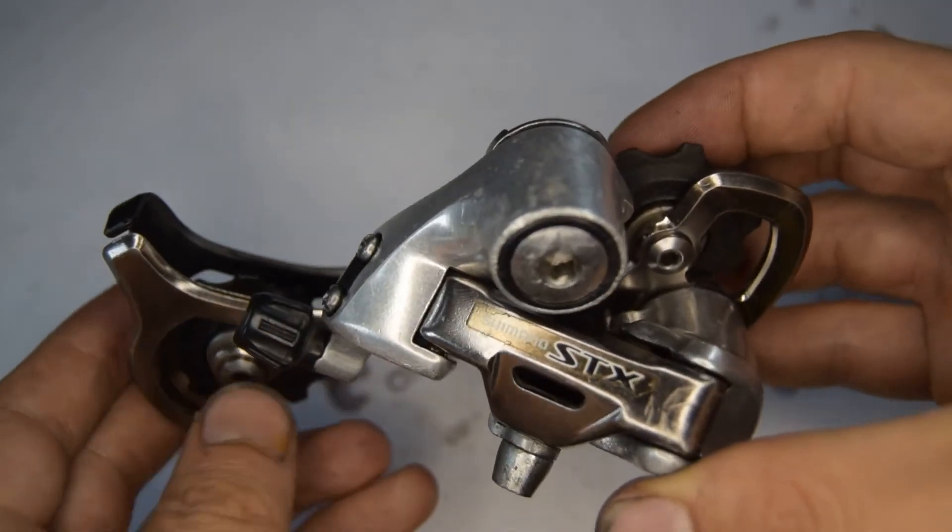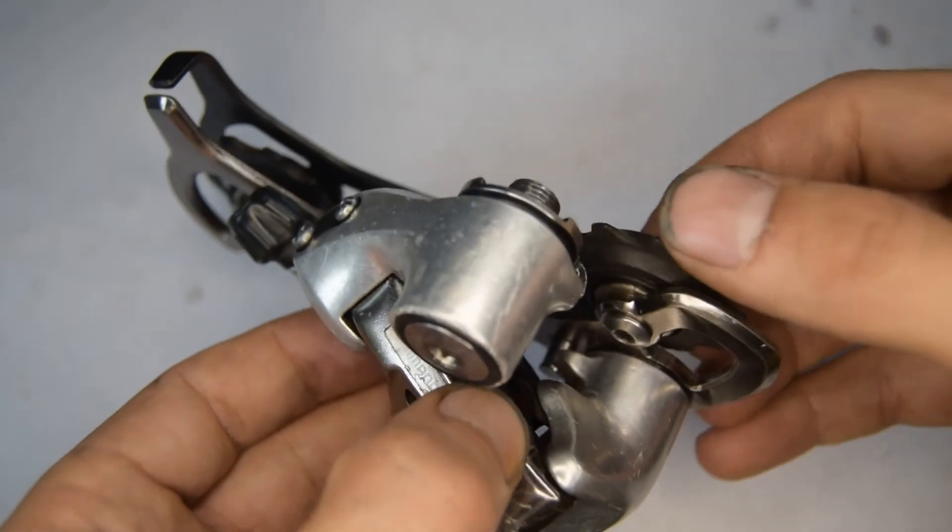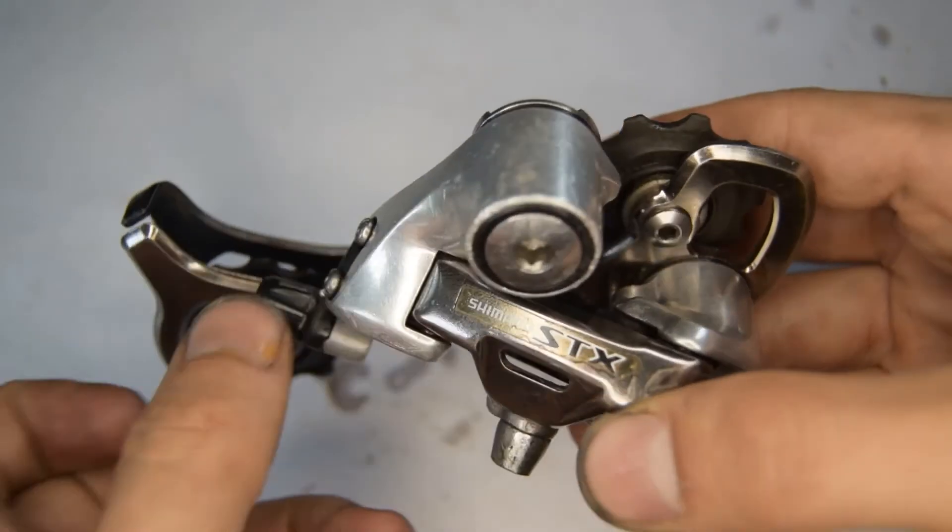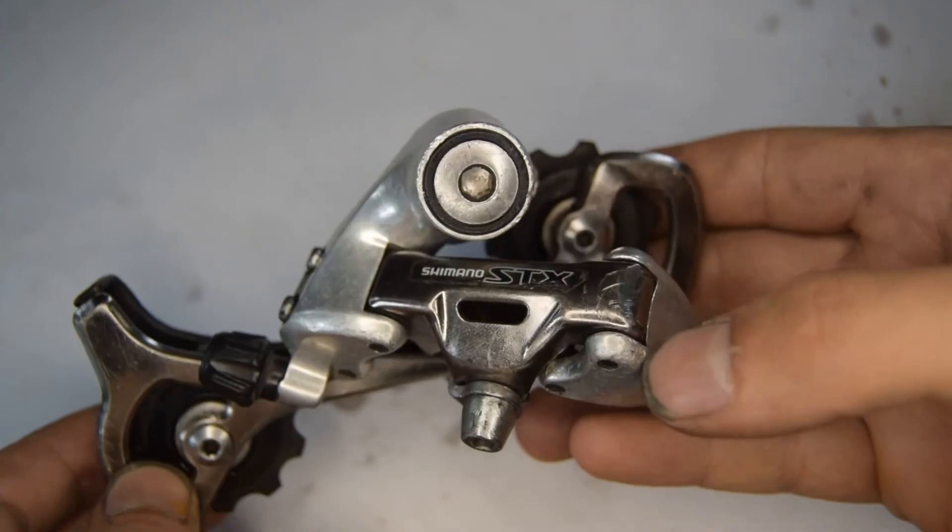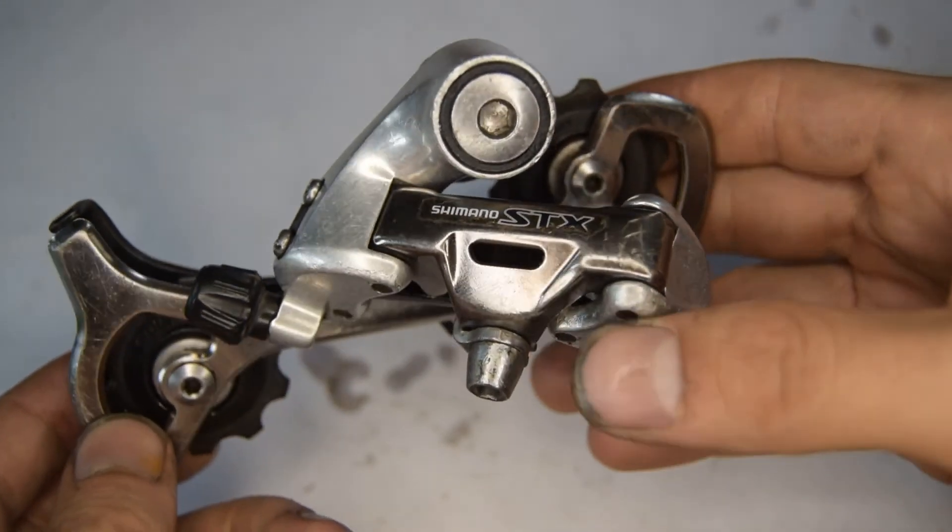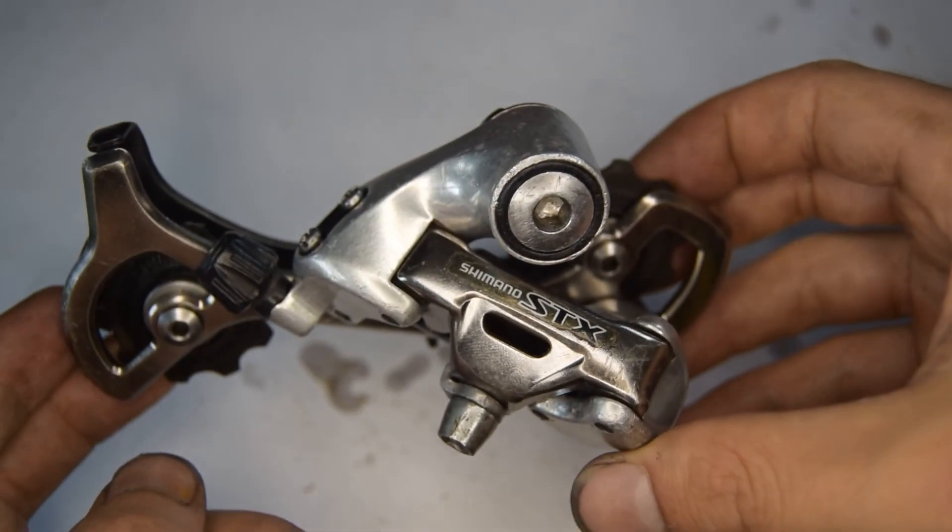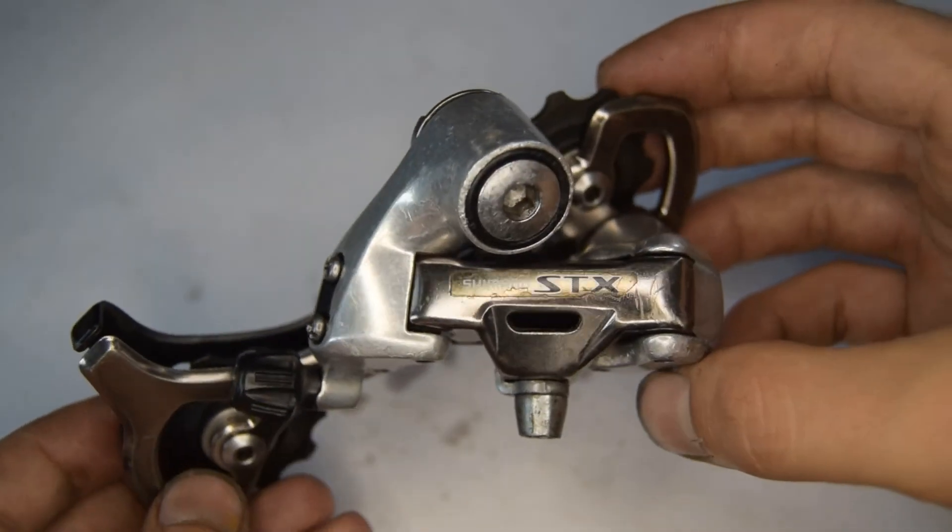Right, so I think that's everything on this derailleur. Still strong, quite original because it has that anodized bronze color. I hope this helps you rebuild your Shimano STX derailleur. Thank you for listening, peace out.